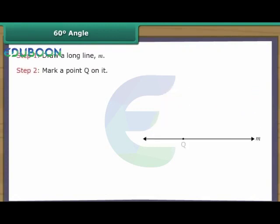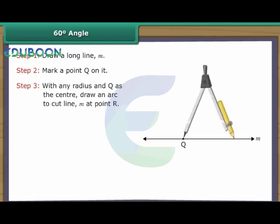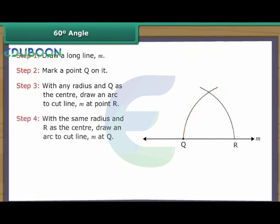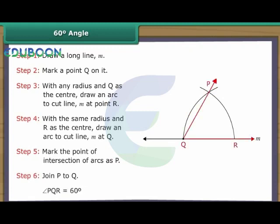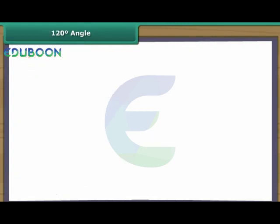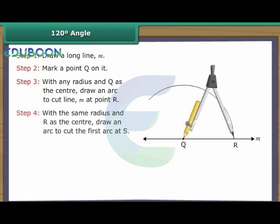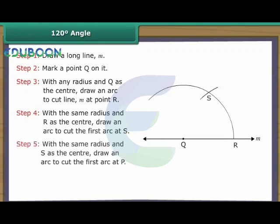Construction of 60 degree angle. Draw a long line M. Mark a point Q on it. With any radius and Q as the centre, draw an arc to cut line M at point R. With the same radius and R as the centre, draw an arc to cut at Q. Mark the point of intersection of arcs as P. Join P to Q. Angle PQR is formed, which equals 60 degrees.